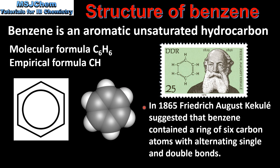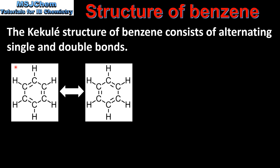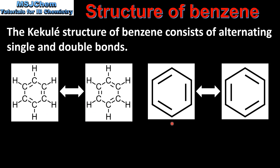Next we'll have a look at the brief history of benzene. In 1865, Frederick August Kekulé suggested that benzene contained a ring of 6 carbon atoms with alternating single and double bonds. Here we have the Kekulé structure of benzene consisting of alternating single and double bonds. Because we can draw more than one Lewis structure for benzene, it exists in two resonance structures, which you can see here.